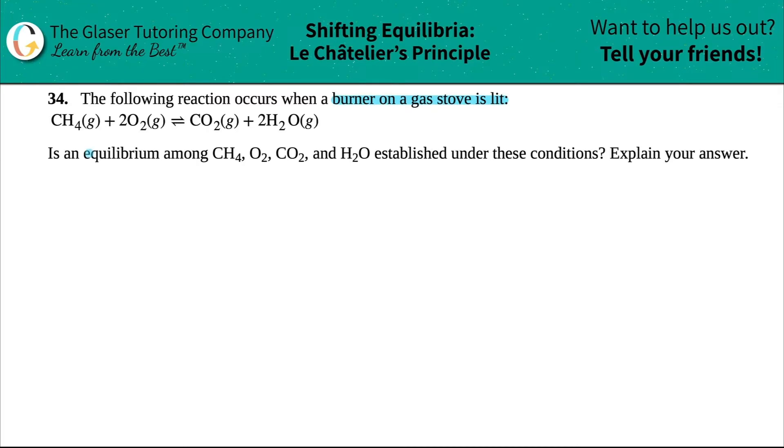Now they're saying, is an equilibrium among the methane, the CH4, oxygen, carbon dioxide, and the water established under these conditions? And then explain your answer. Okay, so obviously the conditions are literally we have a burner on a gas stove.